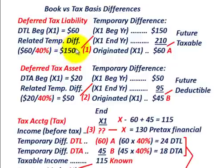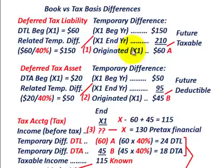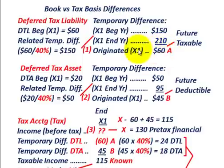Starting with the temporary difference at the beginning of the year of $150,000, we know the temporary difference at the end of the year is $210,000. Comparing beginning and ending balances, there's an increase of $60,000 — this is what was originated during year X1. This $60,000 is a future taxable amount, which results in a deferred tax liability.